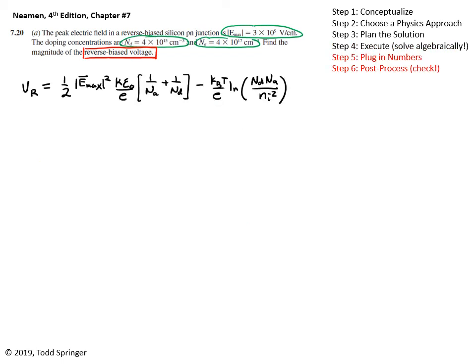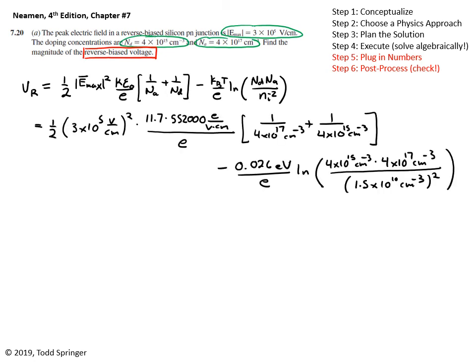Alright, so now let's substitute all the numbers in with the units. And then we'll check the units. Okay, so let's check the units. I plugged in all the numbers here. Notice I plugged in 11.7 for the dielectric constant of silicon. Epsilon naught is a constant. And then I used here assumed room temperature for KBT. So 0.026 EV is the usual value of KT at room temperature. Alright, let's check the units.